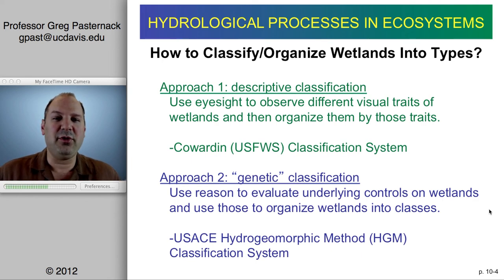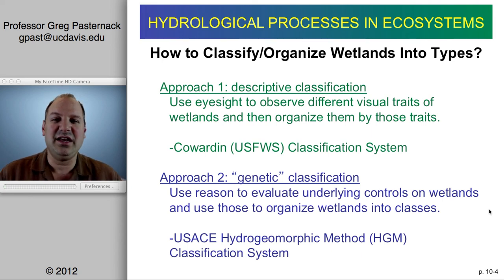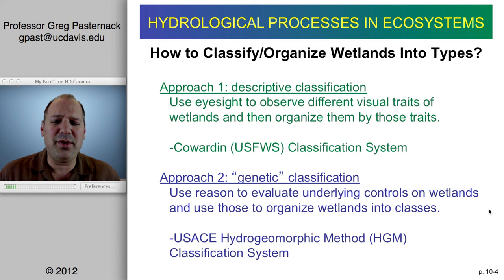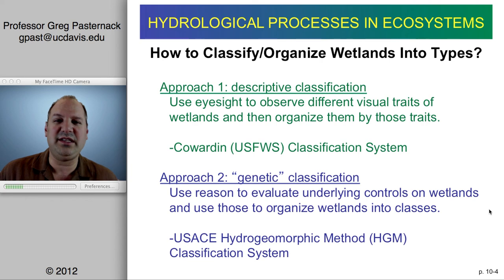More recently, people throughout the earth sciences have come to like what are called genetic classifications. It's not genetic in that it's relating to biological criteria per se, but the philosophy is that genetics provides the mechanistic underpinnings of biological phenomena. In earth science, the idea is to organize wetlands according to their governing controls, not just based on the way they look.